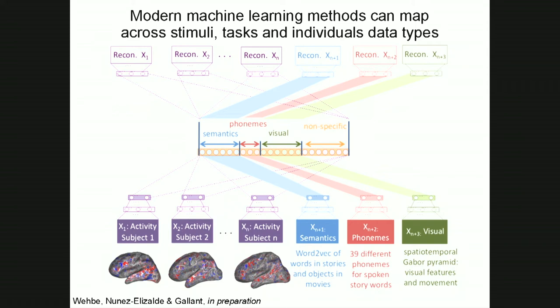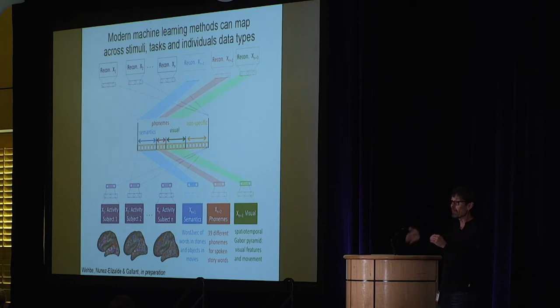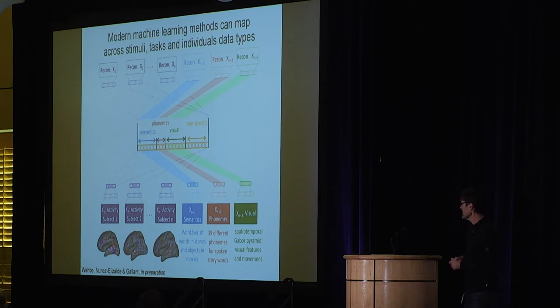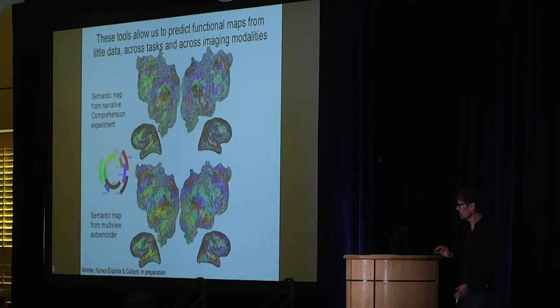This is one machine learning solution called a multi-view autoencoder. It essentially integrates many individual brains and many different kinds of stimulus and task spaces — for example, visual stimuli, audio stimuli, and so on. It integrates all this information together, reduces it down into a low-dimensional representation, and then I can take a new brain or new stimulus type, map it through this autoencoder, and get a prediction with very little data. This allows very efficient mapping across brains, tasks, or stimuli.